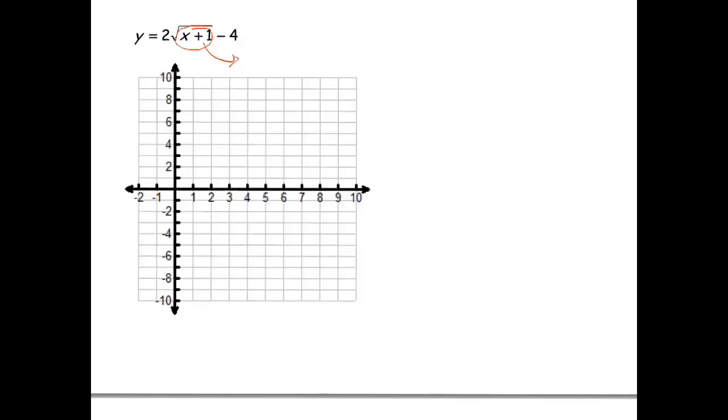which is moving the graph left 1. Then I like to do any type of stretching. So this is a vertical stretch, a factor of 2, which just pulls this graph in a vertical direction. Or in other words, takes those y values and multiplies them by 2. And then the minus 4 right here, we should know that that's going to move the graph down 4.